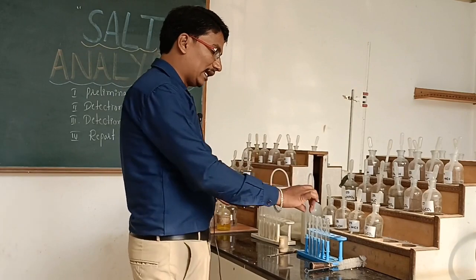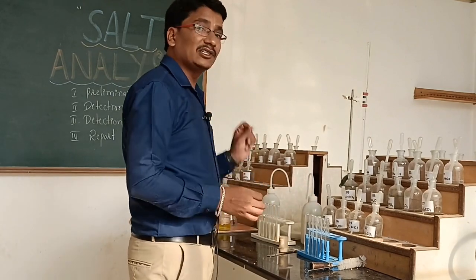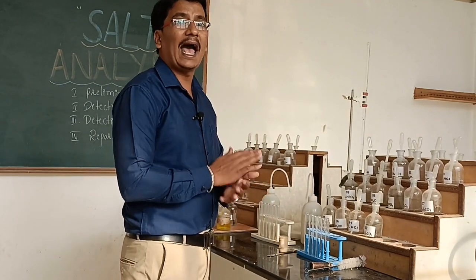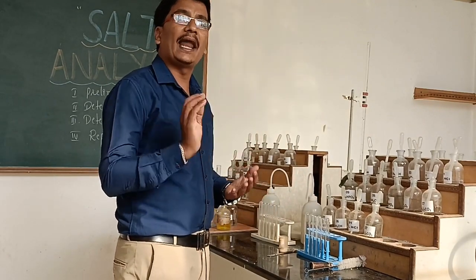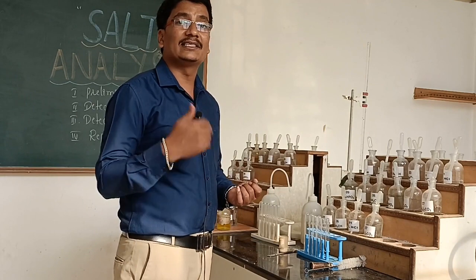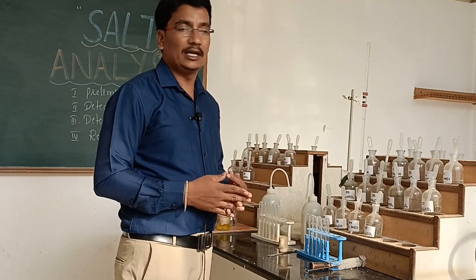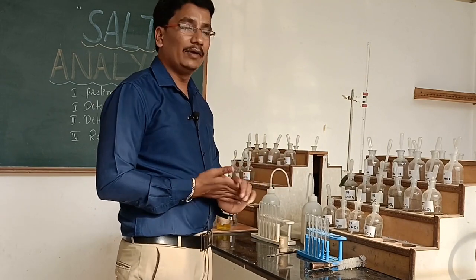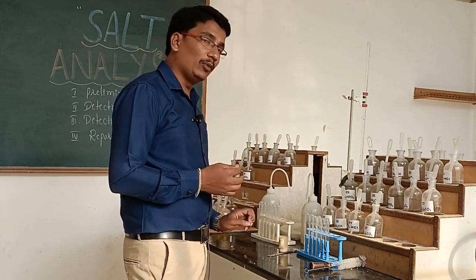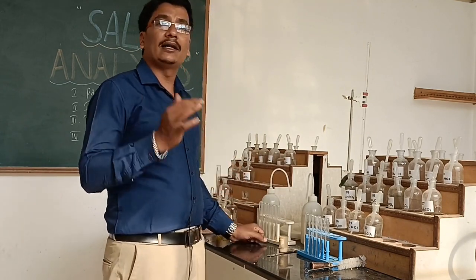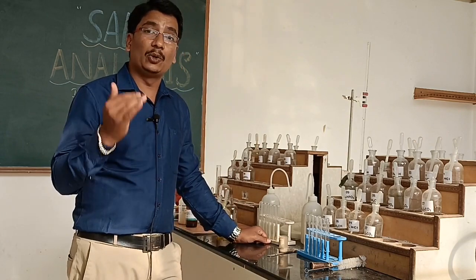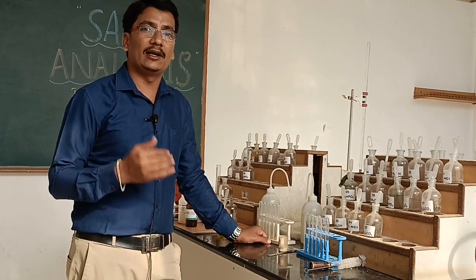Now I would like to start the detection of acid radicals, which are the anions. Anions carry a negative charge. In the beginning, we have to learn that there are three types — three groups — of acid radicals.